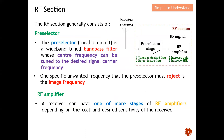Moving on to the RF section — it generally consists of the pre-selector and the RF amplifier. The pre-selector is a tunable, wideband, tuned band-pass filter whose center frequency can be tuned to the desired signal carrier frequency. As mentioned, this pre-selector is a band-pass filter that selects the signal to pass and suppresses the rest.